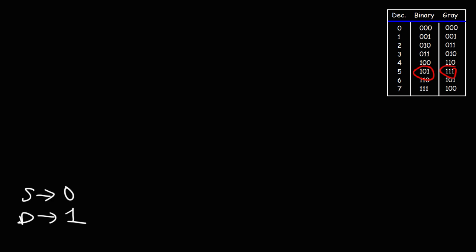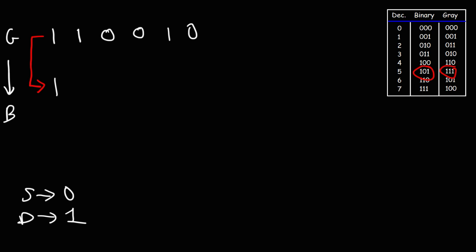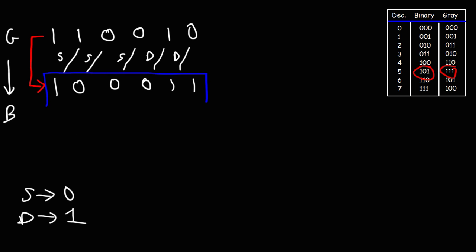Now let's try a harder example. Start with gray code 110010 and convert it to binary. Feel free to pause and try it. First, rewrite the MSB: 1. Then 1 and 1 are the same, so 0. Then 0 and 0 are the same, so 0 again. Those two are the same, so 0. Then 1 and 0 are different, so 1. And 0 and 1 are different, so 1. Thus, gray code 110010 corresponds to binary 100011.